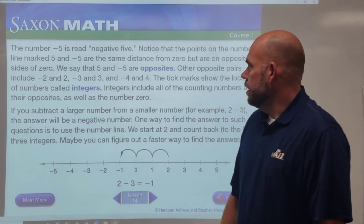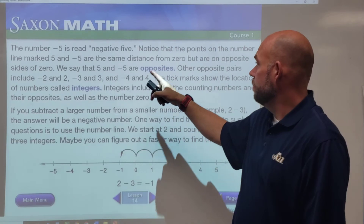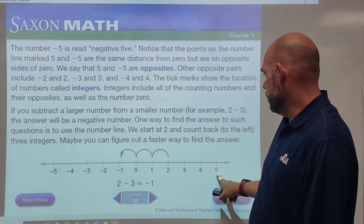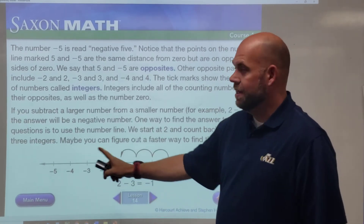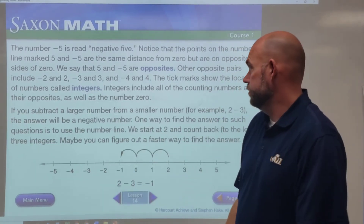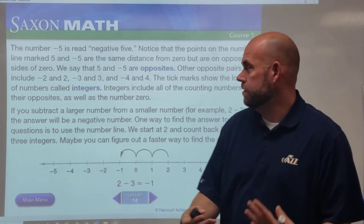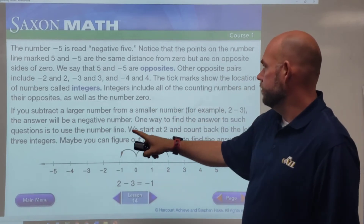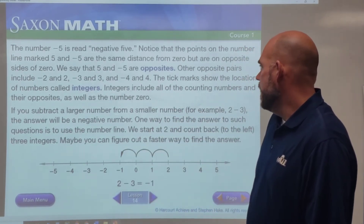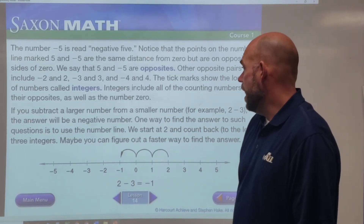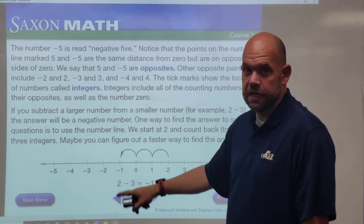The number negative five and positive five are the same distance from zero on the number line — we call them opposites. Just like two and negative two are opposites, or three and negative three. The tick marks show the location of numbers called integers. Integers include all the counting numbers and their opposites, including negative numbers, as well as zero. Zero is considered an integer — it's not positive or negative, it's just an integer.